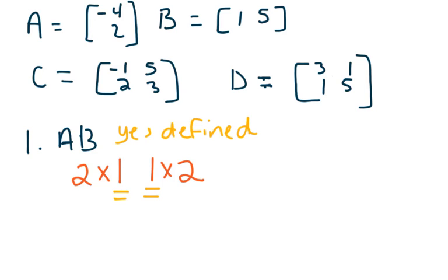Now, the next piece of information I want to know is what dimension will the result be? For that, we take a look at our outside numbers. We're going to have a two by two. Okay, so yes, it's defined, and the result will be a two by two.